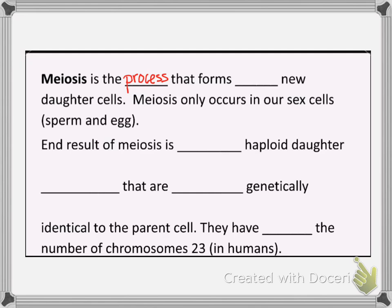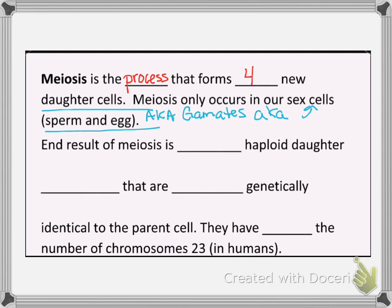Meiosis is the process that forms four new daughter cells. Meiosis only occurs in our sex cells. Sex cells are sperm and eggs. Sex cells are also called gametes. Those are all the same terms — you can use them interchangeably; they all mean the same thing.